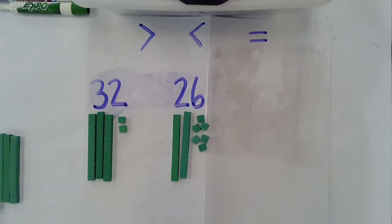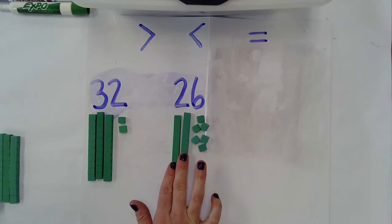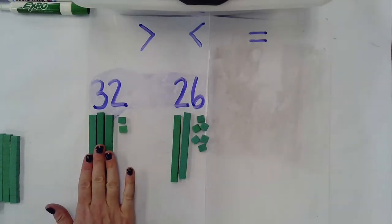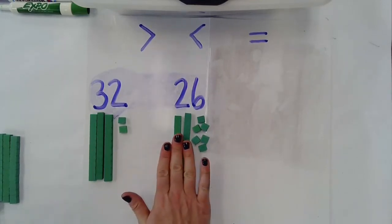So as I look at these two numbers with place value blocks, the first place value that I'm going to focus on is the tens because it's the largest place value in these numbers. So if I'm looking at 32, I have 3 tens. If I'm looking at 26, I have 2 tens. So I know that 32 is bigger because 3 tens is greater or larger than 2 tens.